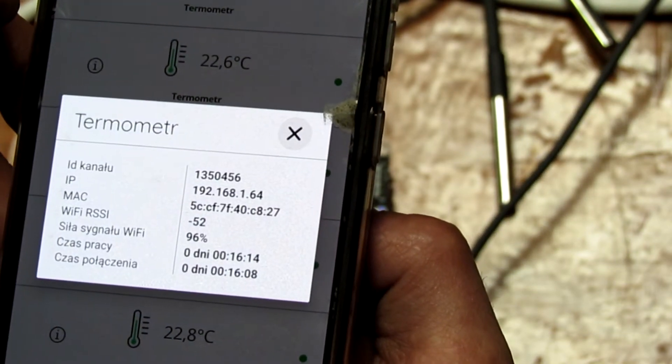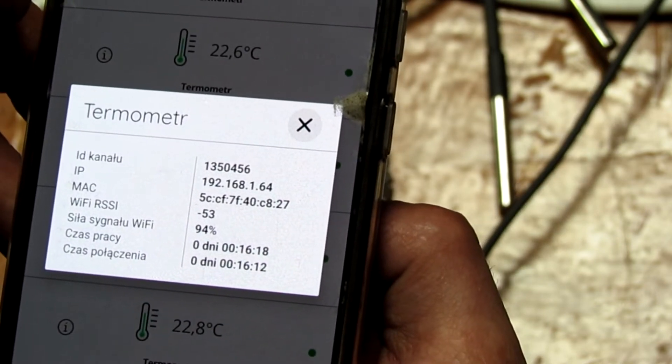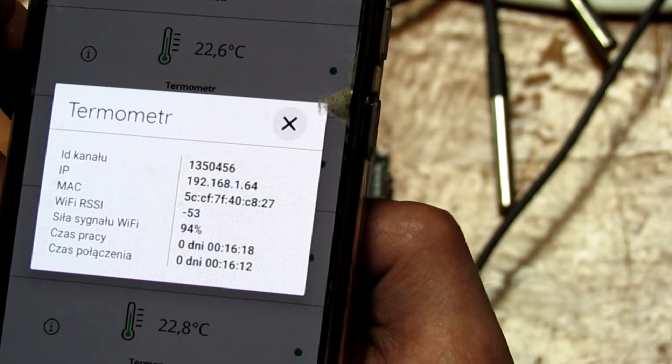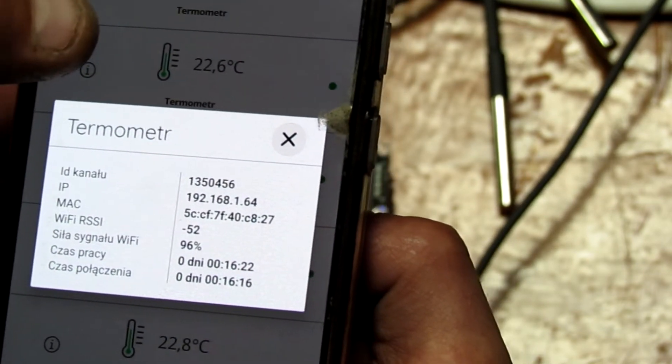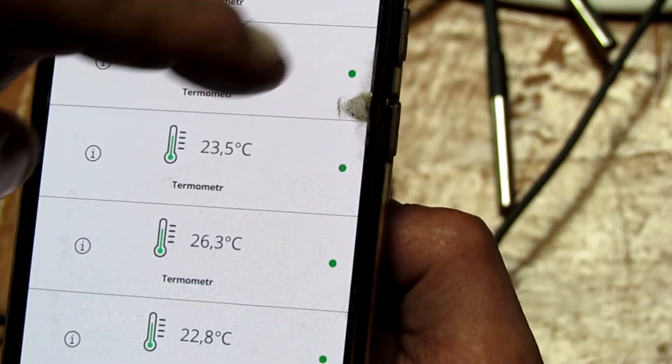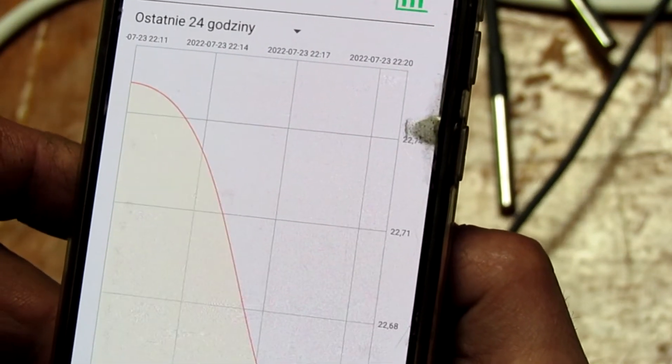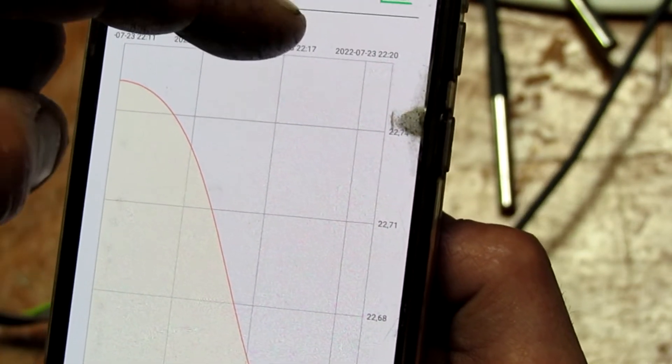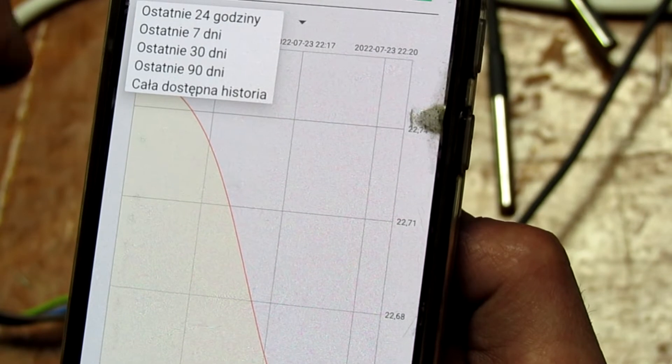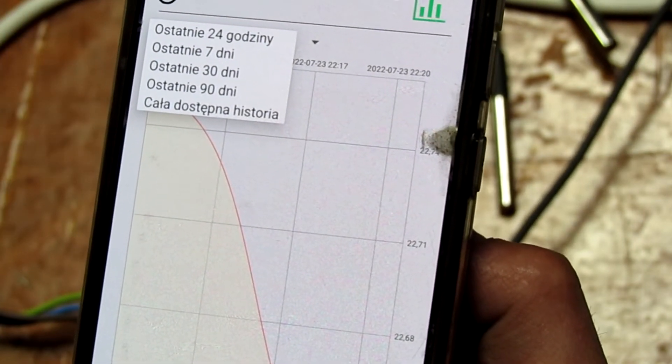Tutaj, gdzie jest i, to jest informacja na każdym czujniku ID kanału, na przykład, czy MAC adres, czy moc na przykład Wi-Fi sygnału. A dodatkowo tutaj na każdym czujniku jeszcze jest wykres. Ten wykres się pojawia w zależności, czy ustawimy na 24 godziny, czy na 7 dni, czy na 30, czy na 90, czy całą historię.